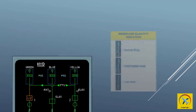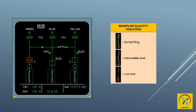Reservoir quantity indication displays hydraulic quantity in green. Indication becomes amber when the fluid level is below the low level warning on the right side of the quantity indicator.